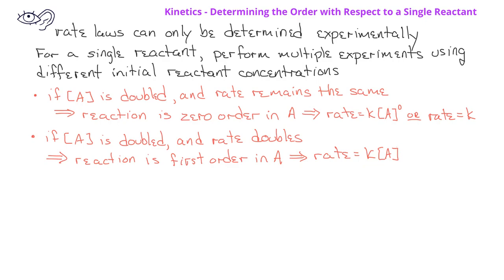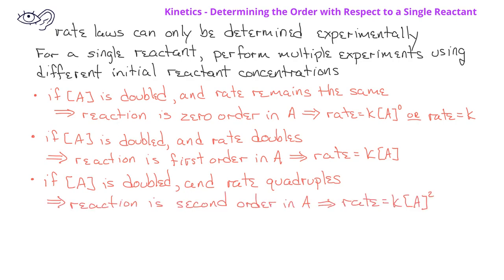If, however, between two experiments the concentration of A doubles and we notice that the rate quadruples, in that situation the reaction is second order with respect to reactant A. The rate law would be rate equals K times the concentration of A to the second power.